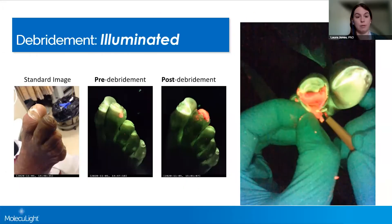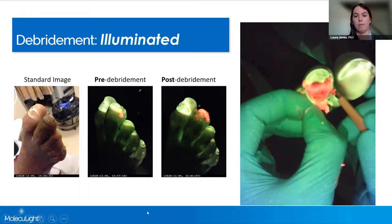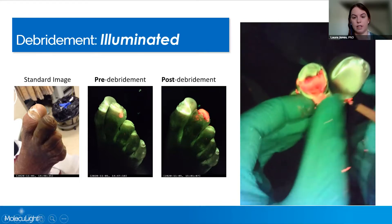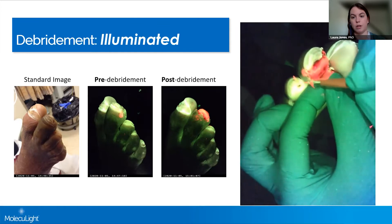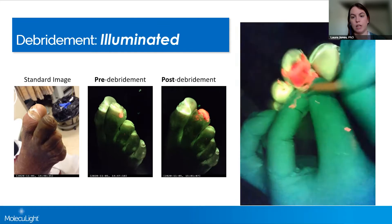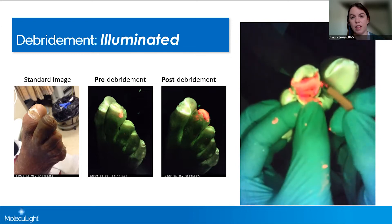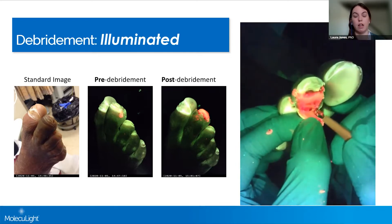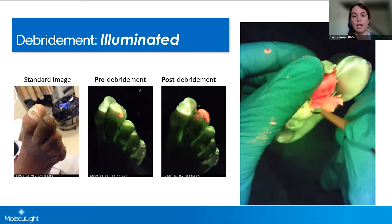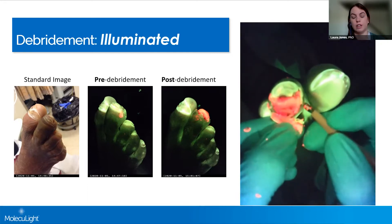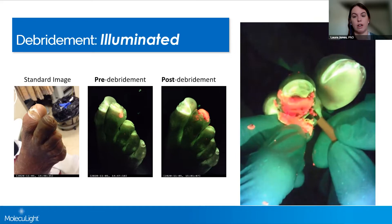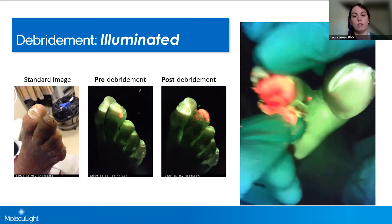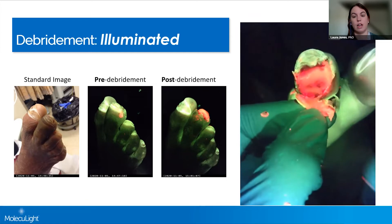As with cleaning, debridement also has implications. You can see there is a lot of red fluorescence in this toe. During debridement, she's really going in, removing that thick callus and discovering a lot of red fluorescence that's hiding underneath. And she can focus on that area of red fluorescence as she goes to remove as much of it as she can.